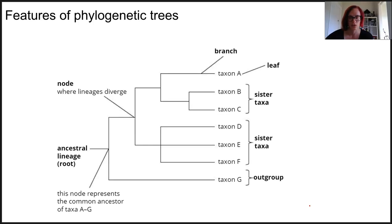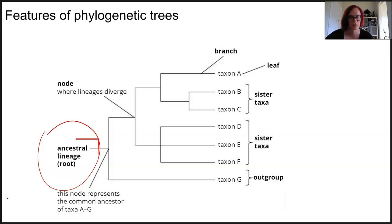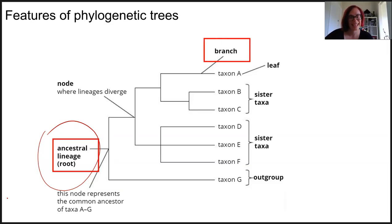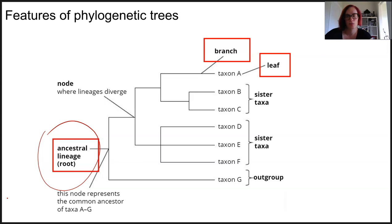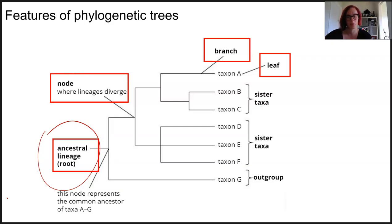Looking at the features of a phylogenetic tree: the root shows the common ancestry; branches are lines representing the hypothesized evolutionary path from that common ancestor; leaves are the terminal taxa — the group at the end, which could be a specific organism with a scientific name; and nodes are where the branches diverge, showing the bifurcation and the assumed last common ancestor between two species.